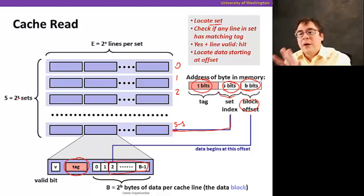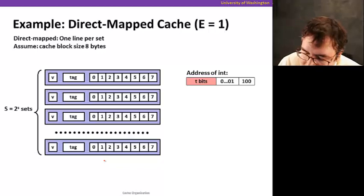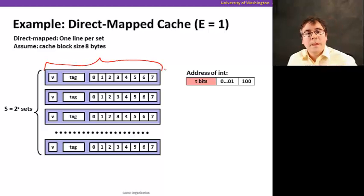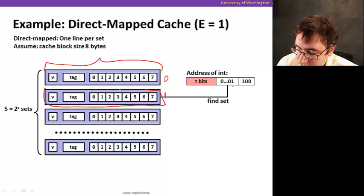Let me show how this works for a direct mapped cache. With a direct mapped cache, there's a single block per set. So what we're going to do is, we start with our address. We're going to find the set. It happens to be 001 here. So it's probably 01. We know that we're interested in this line here.